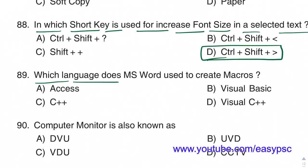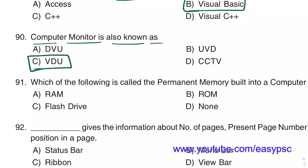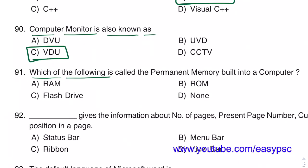MS Word uses Visual Basic language to create macros. A computer monitor is also known as VDU, which stands for Visual Display Unit. ROM, which stands for Read Only Memory, is the permanent memory built into a computer.